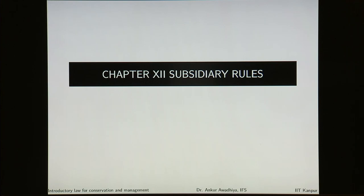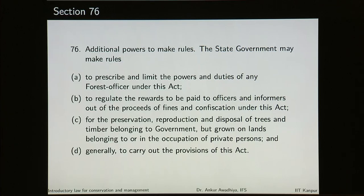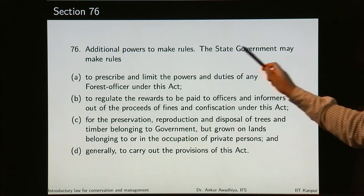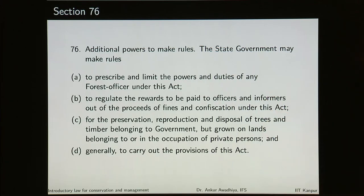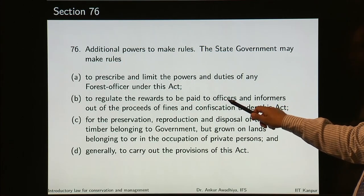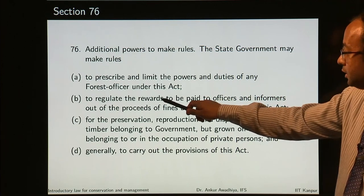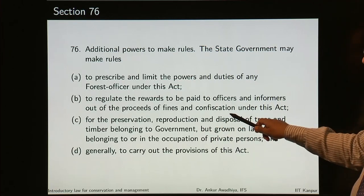Chapter 12 deals with subsidiary rules. Section 76: the state government may make rules to prescribe and limit the powers and duties of any forest officer under this act — for example, prescribing the specific powers and duties of a forest guard versus a range officer. The state government may also make rules to regulate the rewards to be paid to officers and informers out of the proceeds of fines and confiscation under this act.